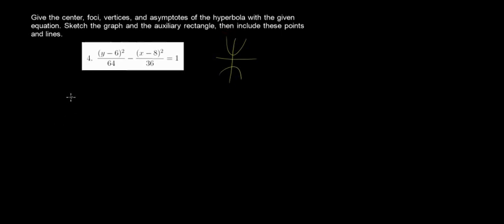Let's look for the values of a and b. Remember the standard equation of a hyperbola with vertical axis? We have (y-k)²/a² minus (x-h)²/b² equals 1. So for this case, by comparing this to our equation, we will know that the center is at (h,k). So our answer is at (8,6).